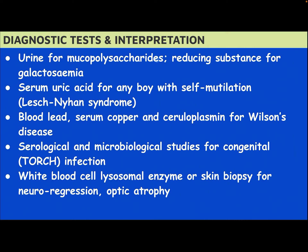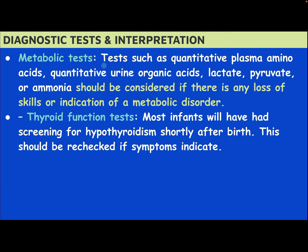Urine for mucopolysaccharide, reducing substances for galactosemia, serum uric acid for any boy with self-mutilation (Lesch-Nyhan syndrome). Blood lead level, serum copper and ceruloplasmin for Wilson disease, serological and microbiological study for congenital TORCH infection, white blood cell lysosomal enzyme or skin biopsy for neuroregression and optic atrophy. Metabolic tests — quantitative plasma amino acids, quantitative urine organic acids, lactate, pyruvate, or ammonia — should be considered if there is any loss of skill or indication of metabolic disorder.